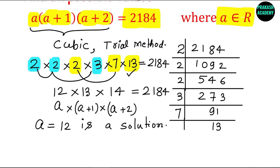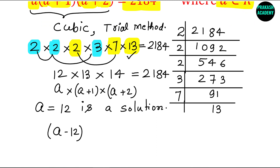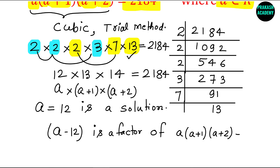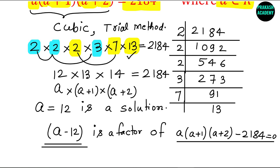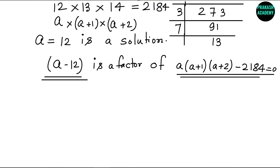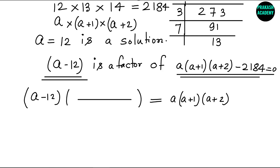Since A equals 12 is a solution, A minus 12 is a factor of the expression A times A plus 1 times A plus 2 minus 2184 equals 0. In other words, this expression can be written as A minus 12 times some other factor. To find that factor, we can divide A into A plus 1 into A plus 2 minus 2184 by A minus 12.